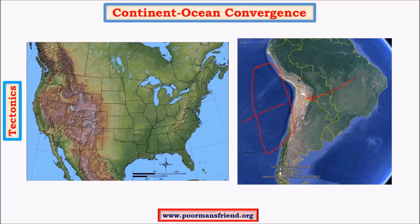The plates involved are the Nazca plate in the case of the Andes and the South American plate, which are interacting and moving towards each other. In the other case we have the interaction of the Pacific plate and the North American plate, and also a minor plate called the Juan de Fuca plate to the north, and other plates like the Cocos plate to the south.